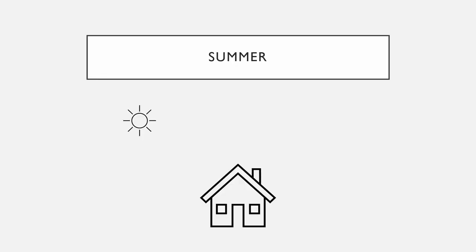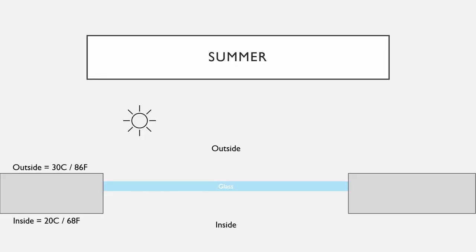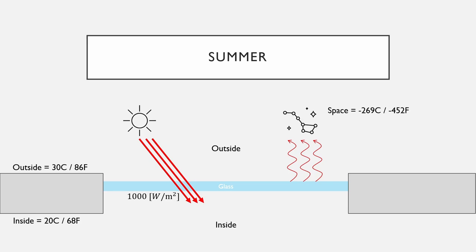Let's start with the summer first and zoom in on the window. In the summer, you want to keep the inside cooler than the outside, but windows let in about 1000 watts per square meter of sunlight. For context, if you have a 9 square foot window, that's like microwaving your room. Fortunately, while glass is transparent to sunlight, it's a great emitter of far infrared radiation and actually emits that radiation into space, which is very cold.